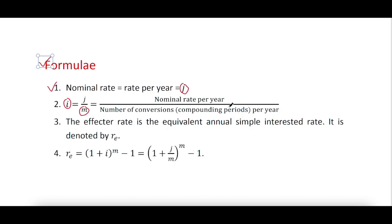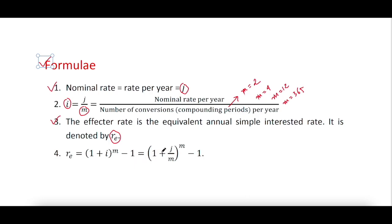For example: when interest is compounded semi-annually, m = 2; when compounded quarterly, m = 4; when compounded monthly, m = 12; when compounded daily, m = 365. So m is the number of compounding periods per year, and r_e = (1 + j/m)^m − 1.